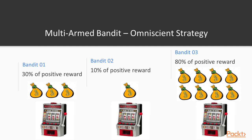This fake story illustrates the strategy behind the Omniscient Agent. This agent is already conscious about the true value of the probability of success from all bandit machines and it only plays with the most profitable one. Let's get started.